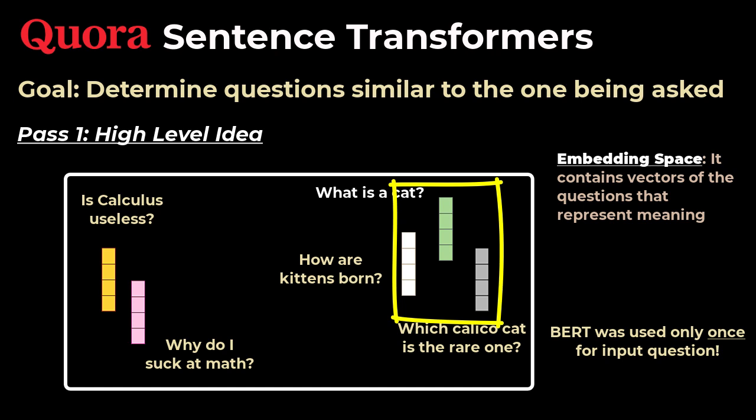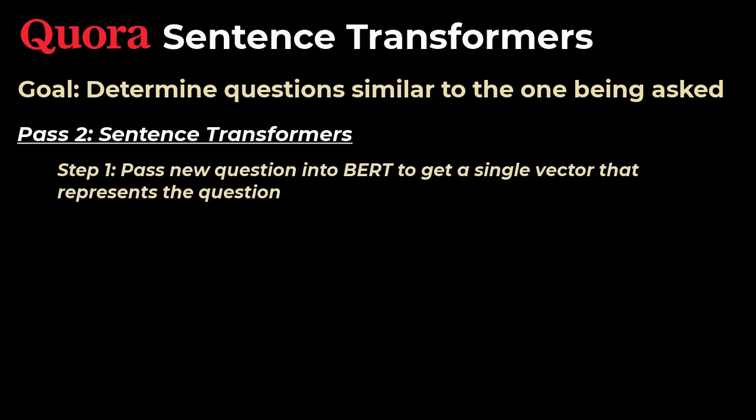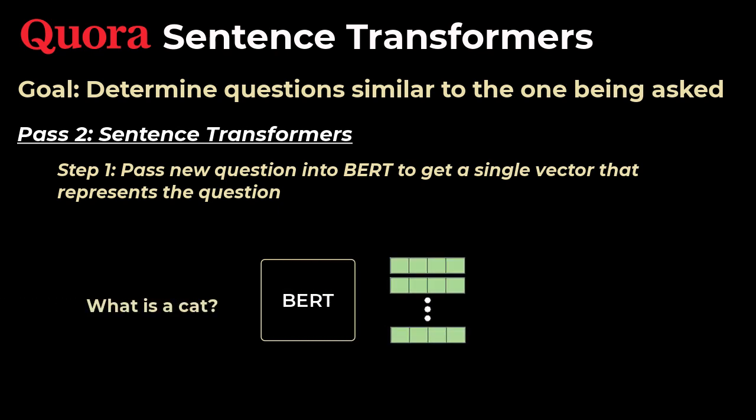But clearly to implement this, there are a lot of unanswered questions, which we will take a look into now in pass two. So the first step was to pass a new question into BERT to get a single vector that represents the question. But BERT only gives us word vectors. So if you want a sentence vector instead, you'll need to somehow aggregate these word vectors by passing it through some unit, and the most straightforward way of doing this is to just take the average of these vectors, which is like mean pooling.